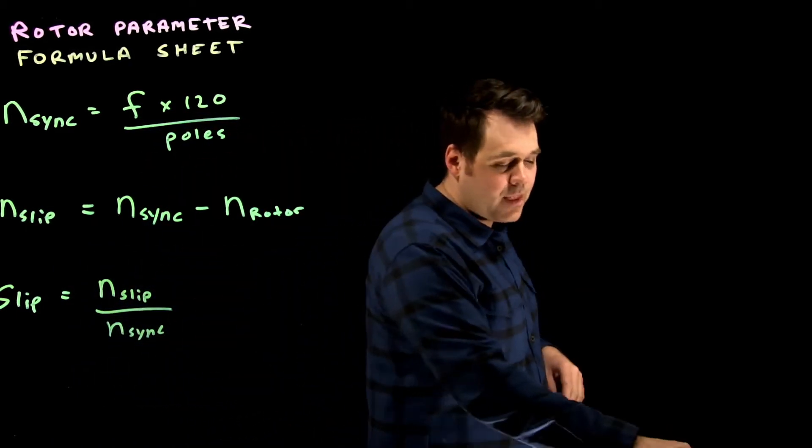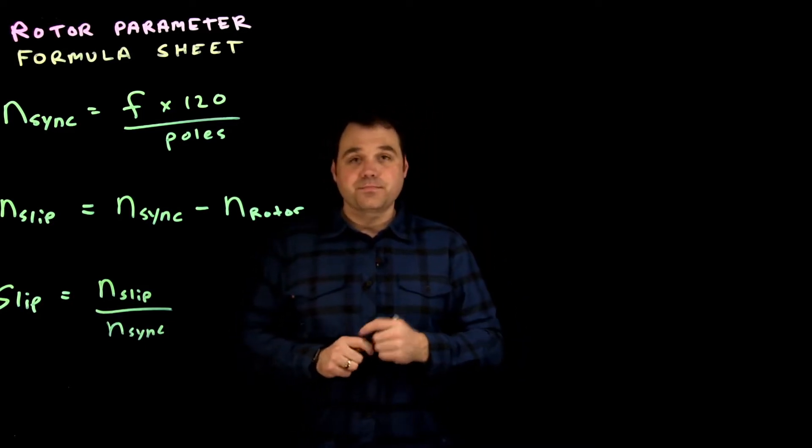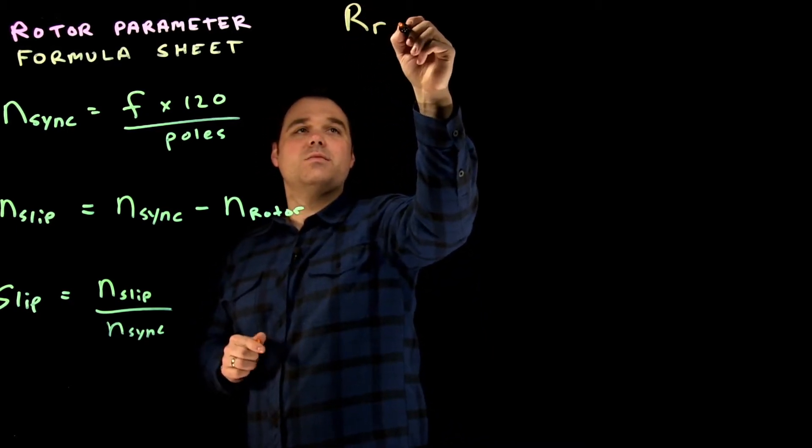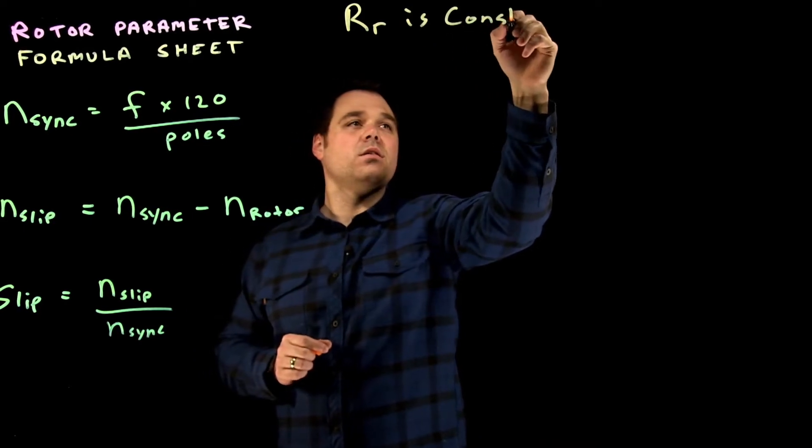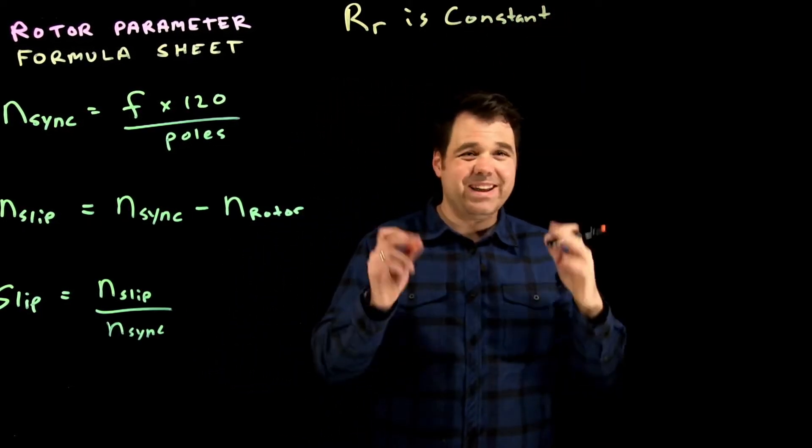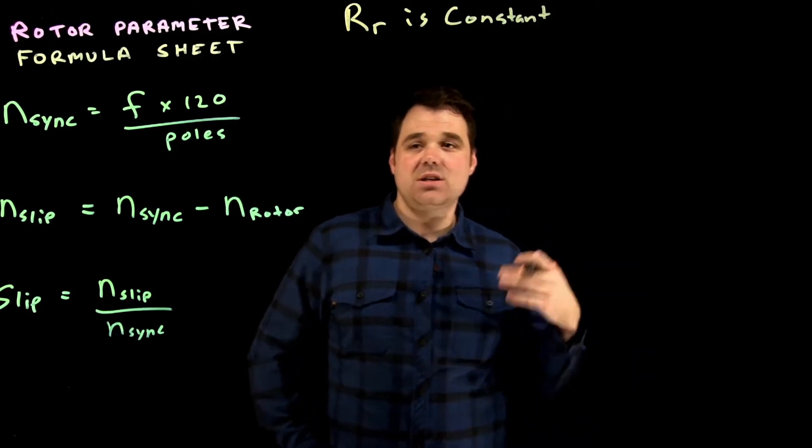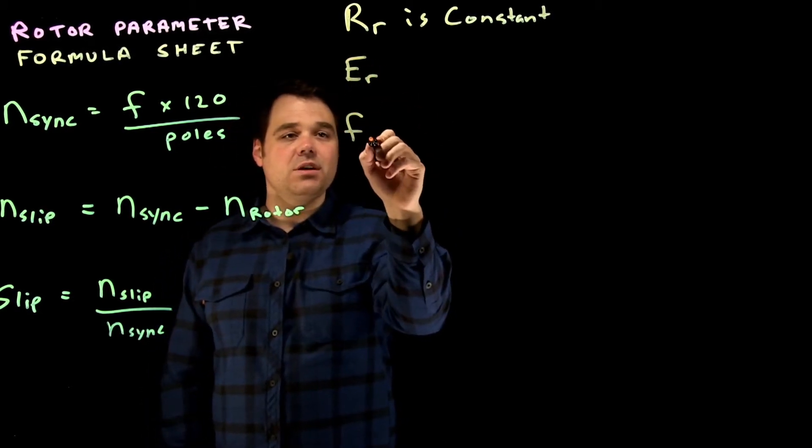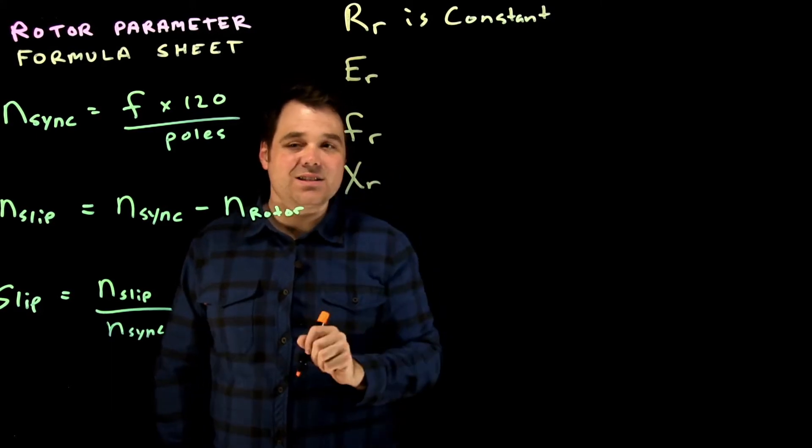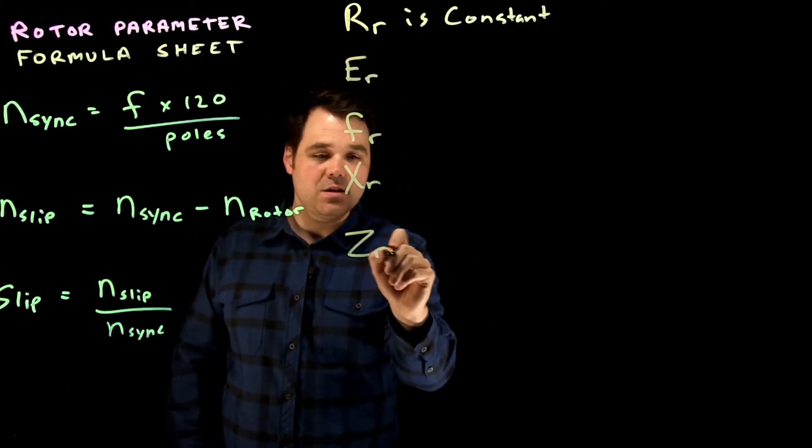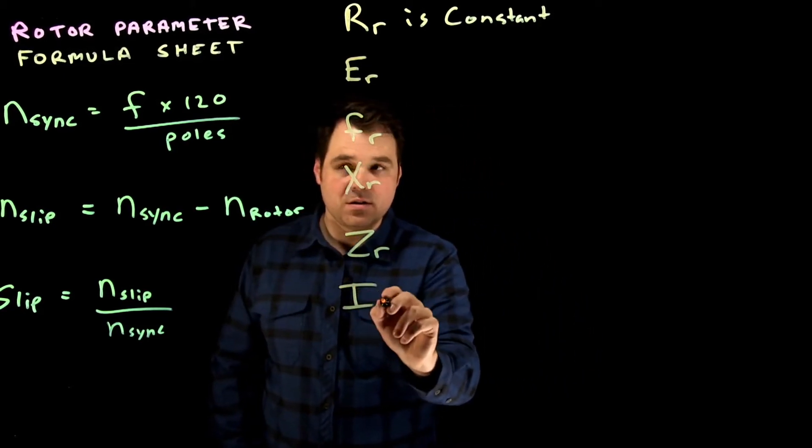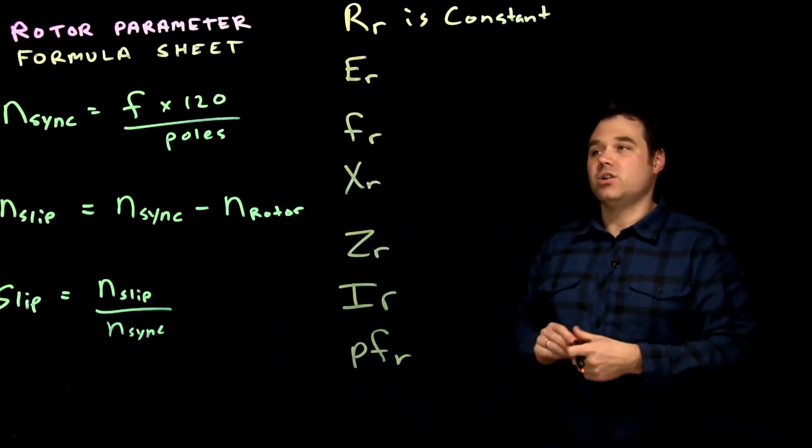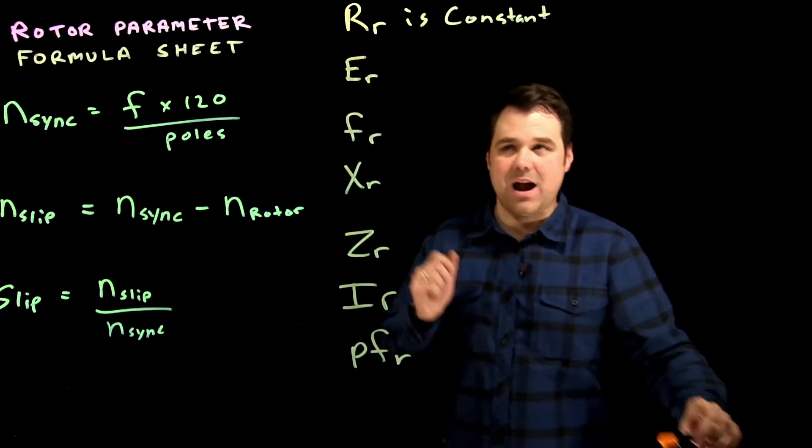So all of those have to do with speed. The frequency inside the rotor, the reactance inside the rotor, the impedance inside the rotor, the current inside the rotor, and the power factor inside the rotor will all be changing proportionally to that slip. So let's talk about how all of these change.